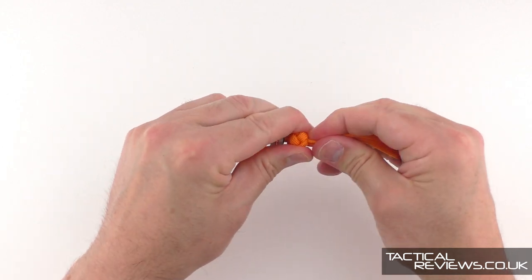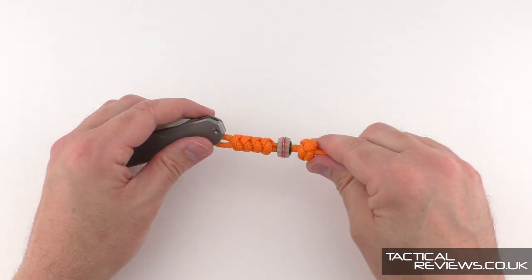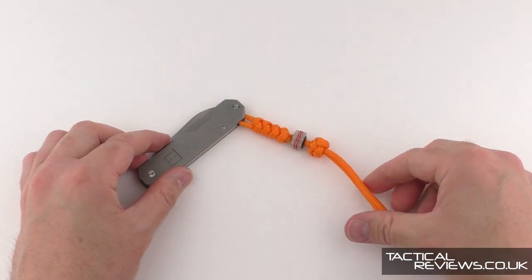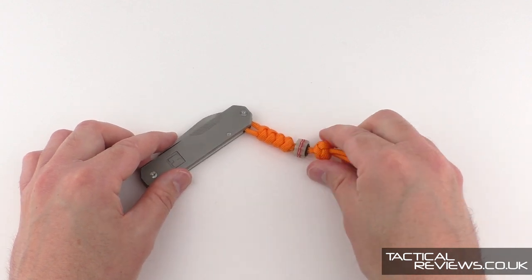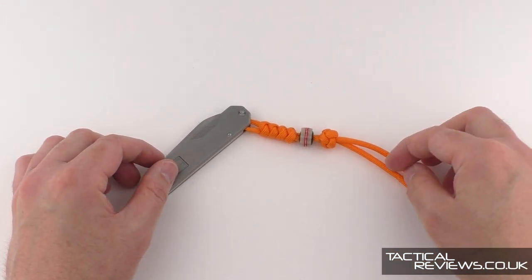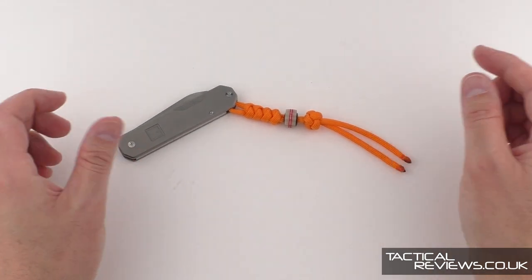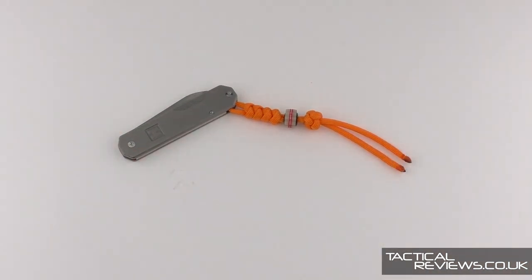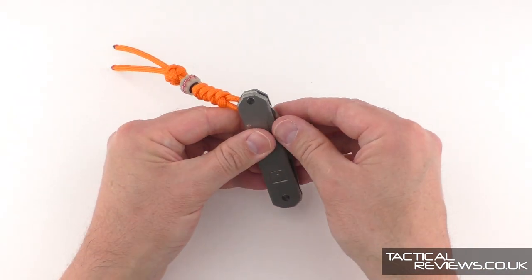And there we go. So how you finish the actual final ends is up to you. If you want to trim them shorter, you can melt them into the knot and just have a knot at the end, or you can leave them loose. And there we have the Penfold with a Root Italy Cog Bead exclusive to Heinnie Haynes.